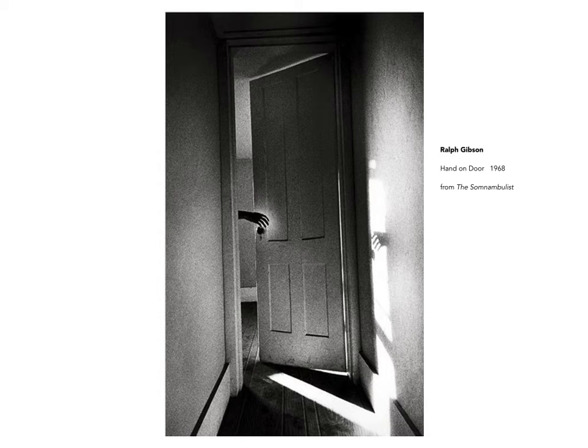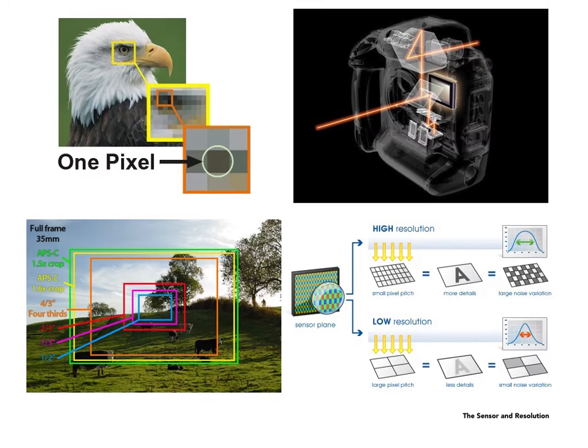This image by Ralph Gibson has a very different agenda. Part of Gibson's style was to play up the grain in his images. This also shows use of a bit of manipulation to create the glow around the hand — it's a very compelling image and is no less a great photograph than the Weston, despite being very grainy. This gives you an idea of the size of a pixel; the number of pixels determines the resolution of an image. The smaller the pixels and the more of them there are, the greater the detail in your final images.